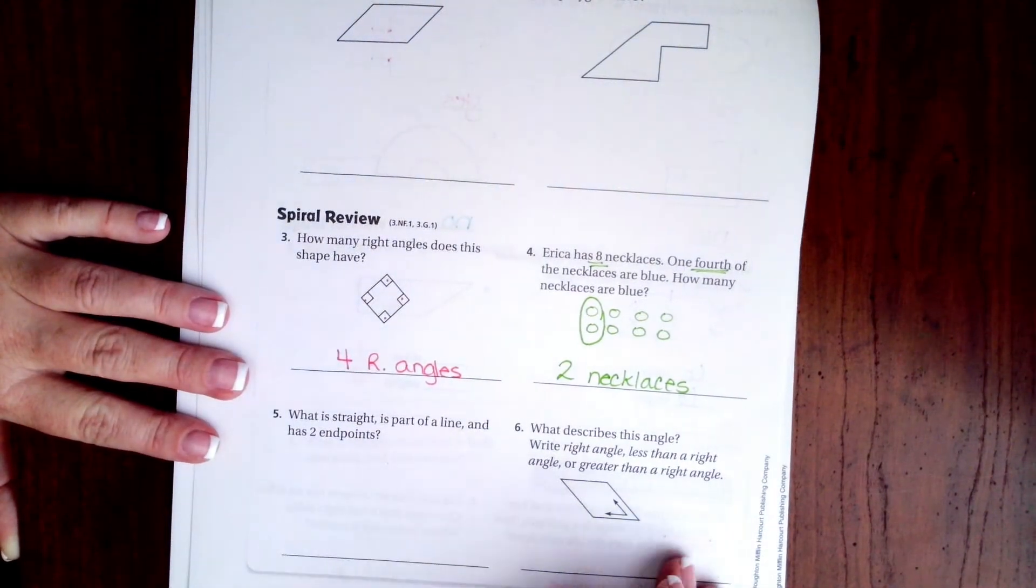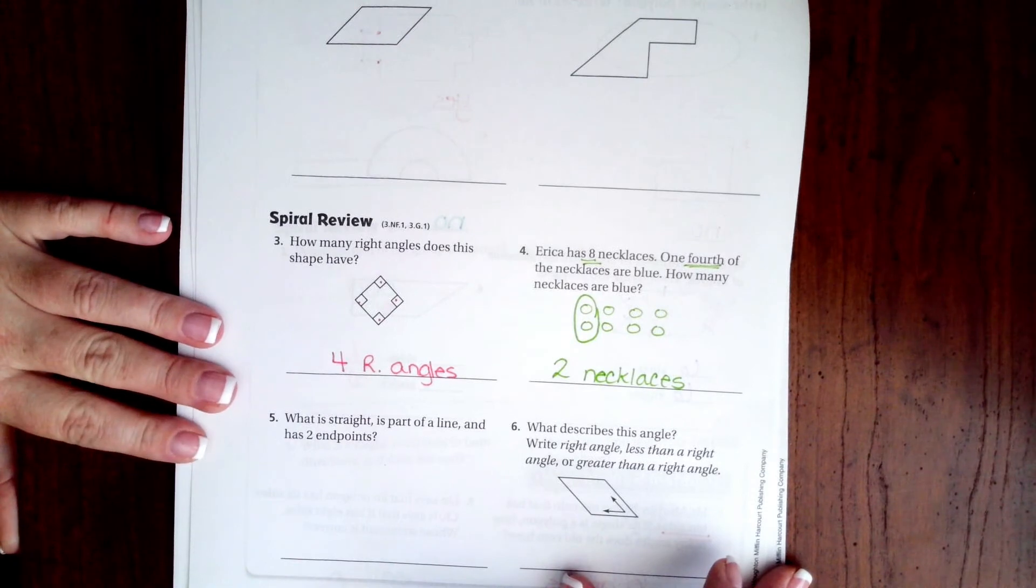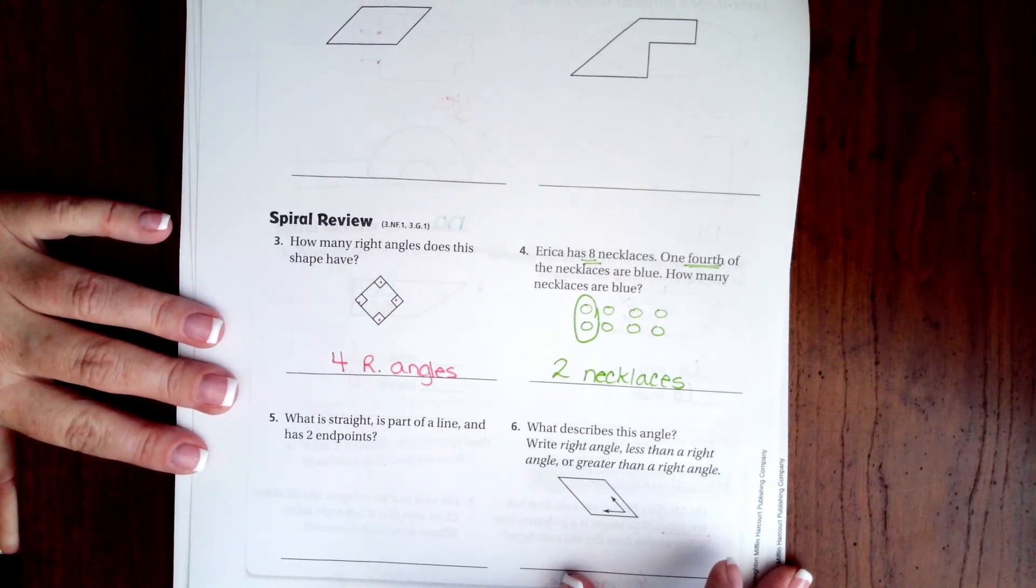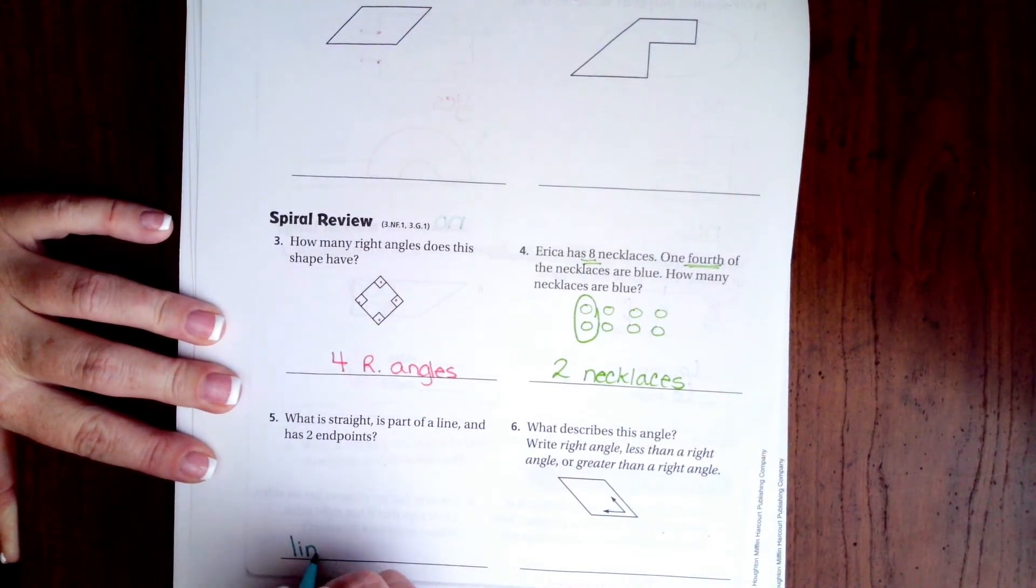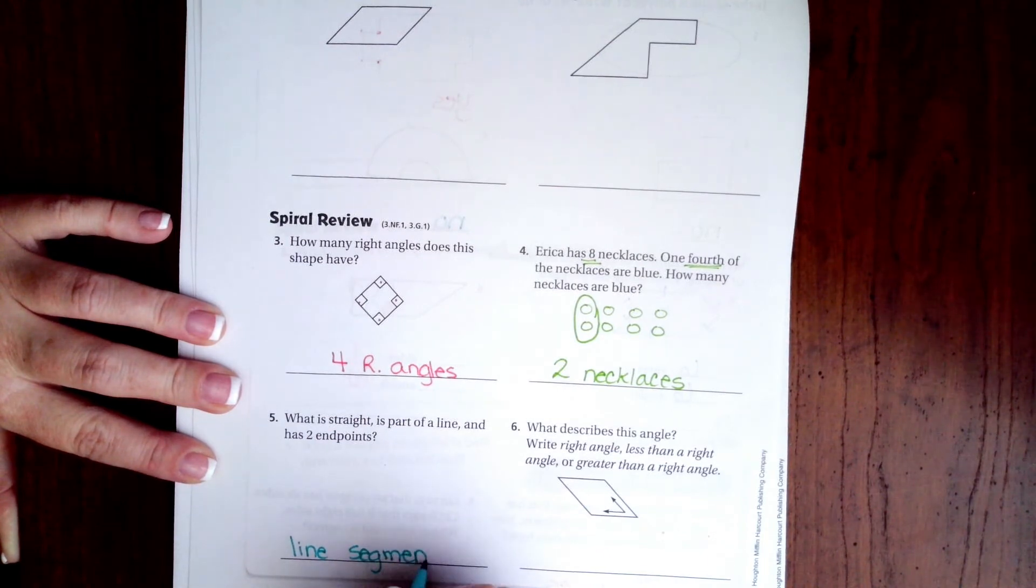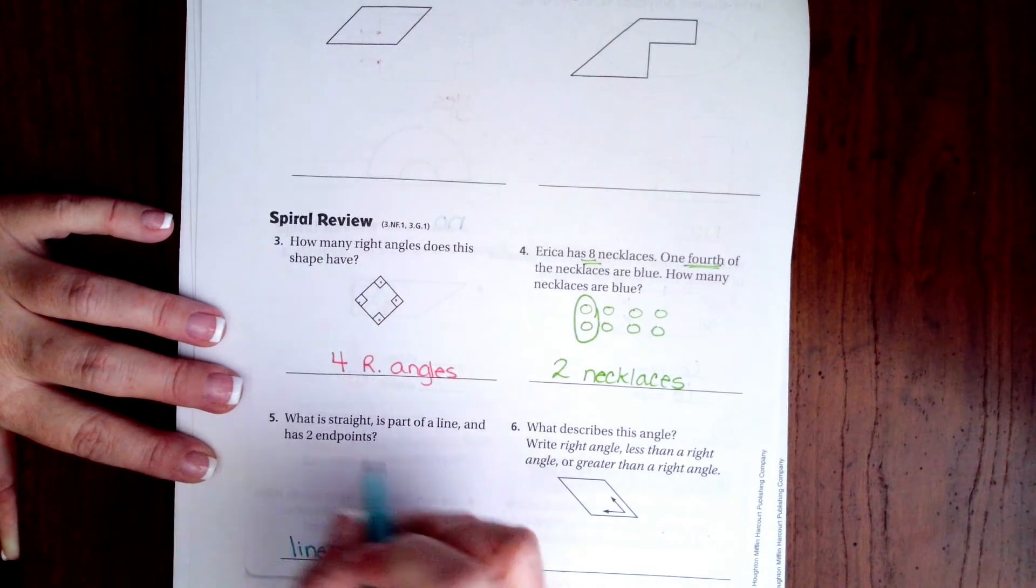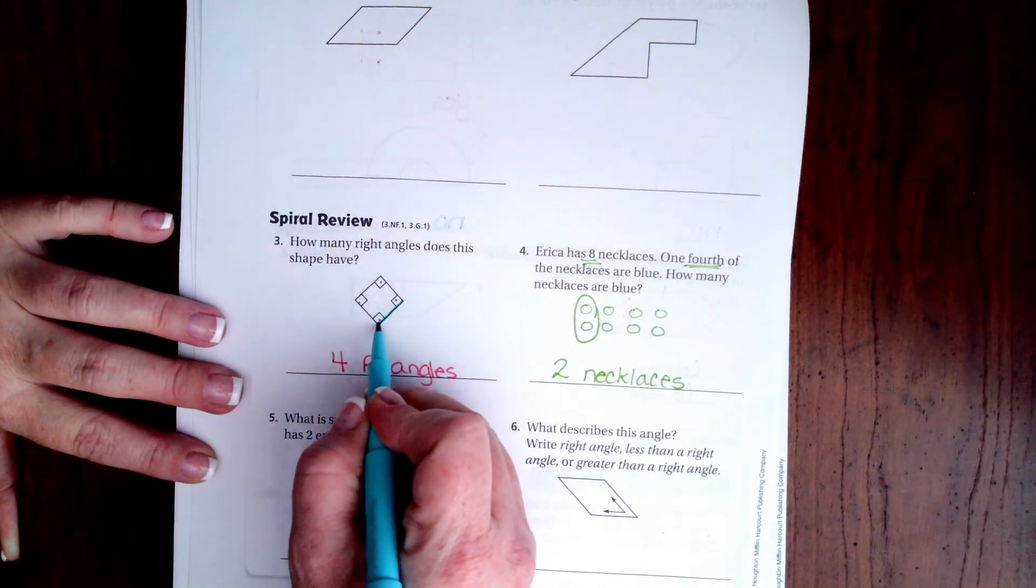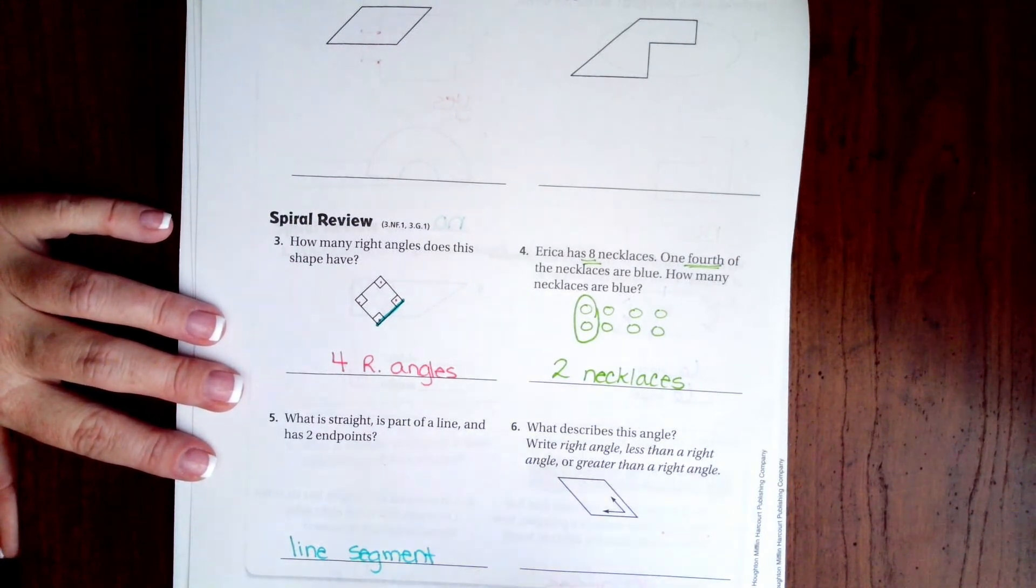Number five, what is straight, is part of a line and has two end points? Guys, that's a line segment. That is right where these guys end, goes from one to the other. It has an end point on either side. That's a line segment.